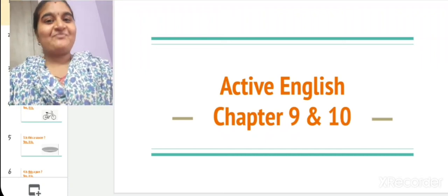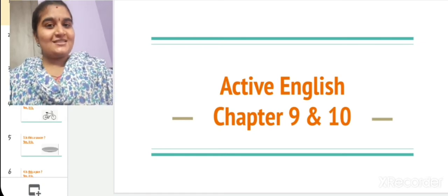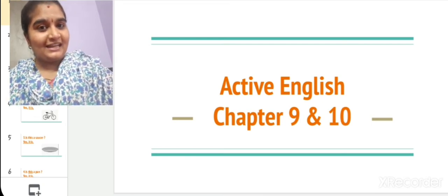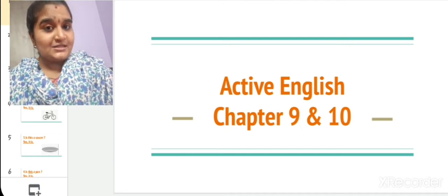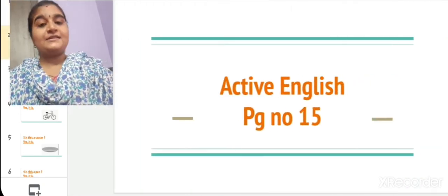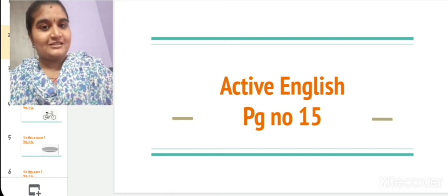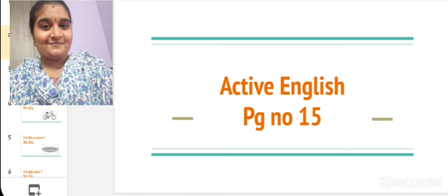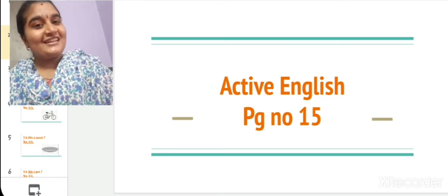Good morning, children. Today in our English class, we are going to see Active English. Children, you all have your Active English book, right? Take out your Active English book. Take chapter number 9 and 10. These two chapters are a single chapter, okay, children? It's on page number 15. Take page number 15. Did you all take it, children? Very good.